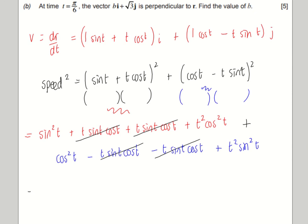So that leaves us with a sine squared t, we've also got a cos squared t, and then we've got our t squared sine squared t and a t squared cos squared t.